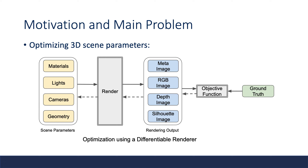Making the rendering process differentiable has lots of advantages. First, it can help to optimize 3D scene parameters. Given those parameters, the renderer will generate output images like RGB, depth, or silhouette images. Then we can compute an objective function based on the rendering output and target image. If the renderer is differentiable, we can backpropagate the gradient to optimize the scene parameters to minimize the objective function. This is useful to optimize camera pose, global illumination, materials, or 3D object shape.